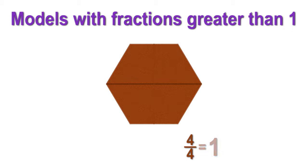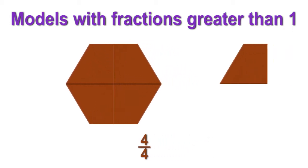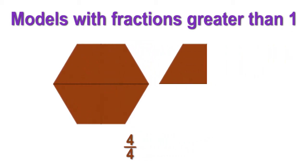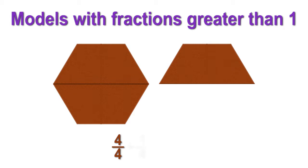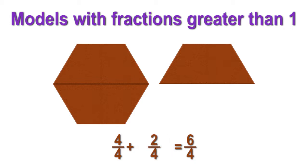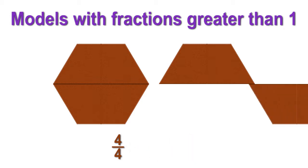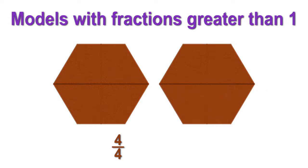The whole is a hexagon. What equation would represent the whole plus 1 more? Four fourths plus 1 fourth equals 5 fourths. What equation would represent a whole plus two more? Four fourths plus 1 fourth plus 1 fourth equals 6 fourths, or 4 fourths plus 2 fourths equals 6 fourths. What equation would represent a whole plus four more fourths? Four fourths plus four fourths equals eight fourths, which is equivalent to two wholes.